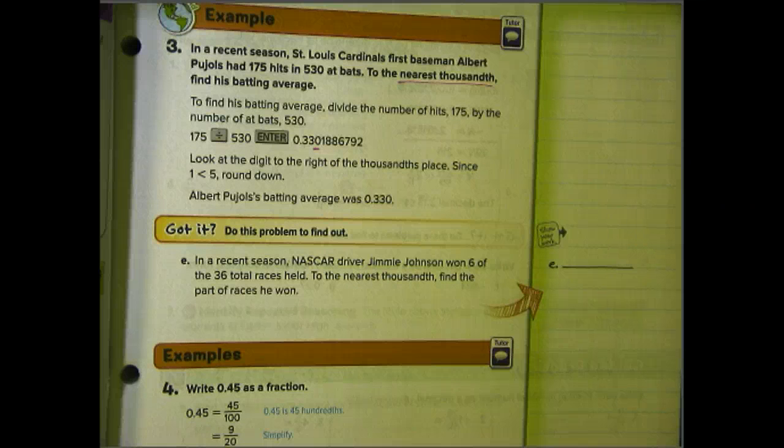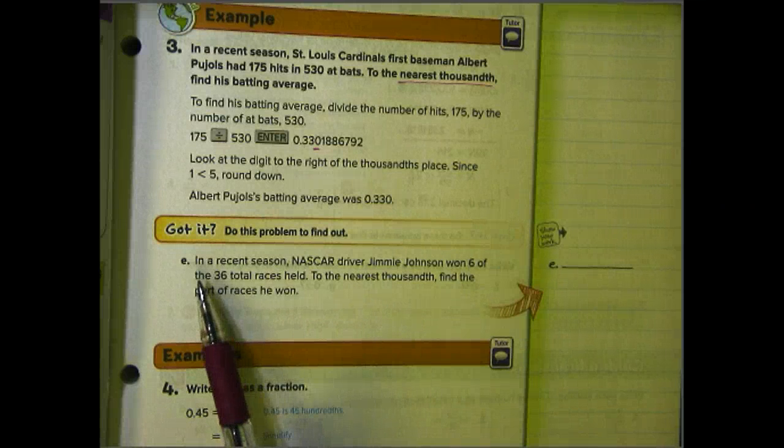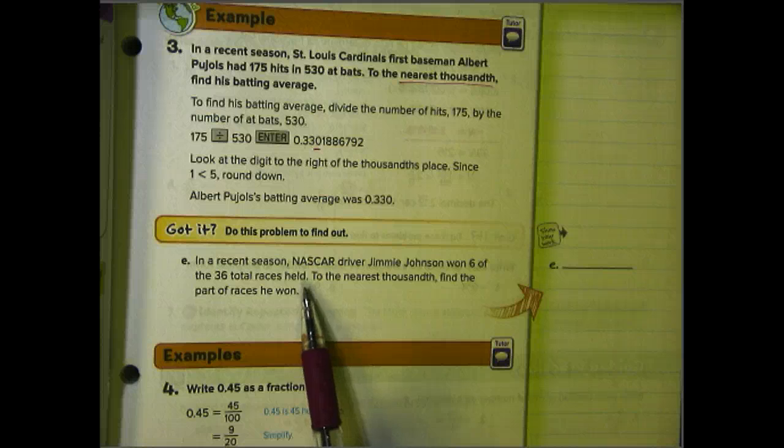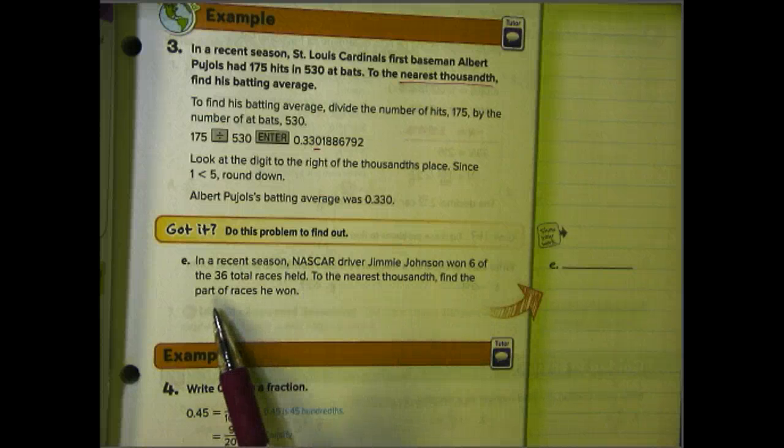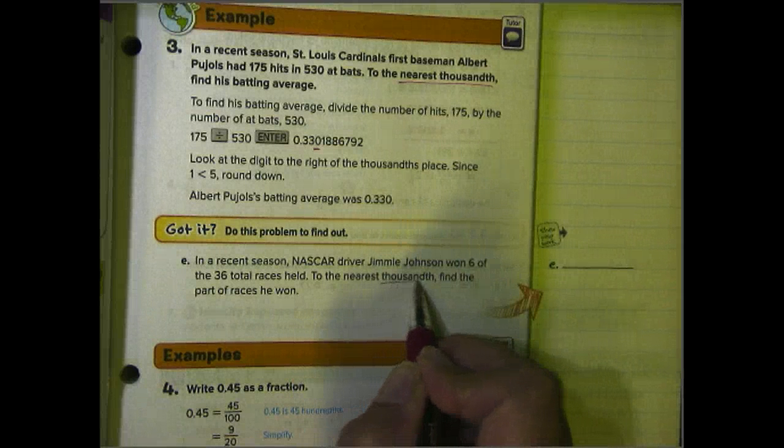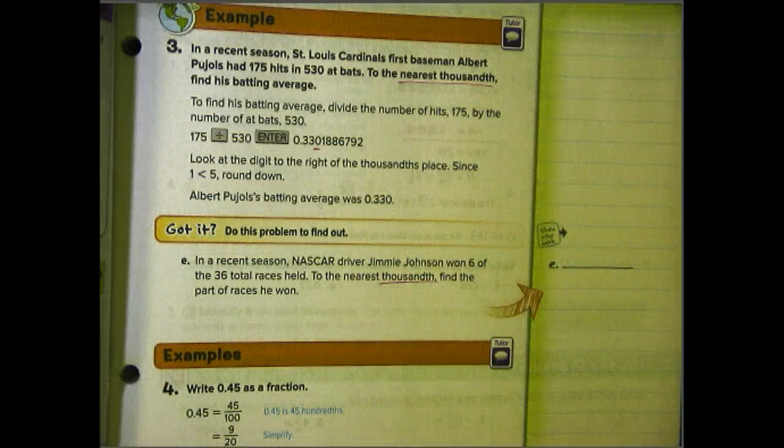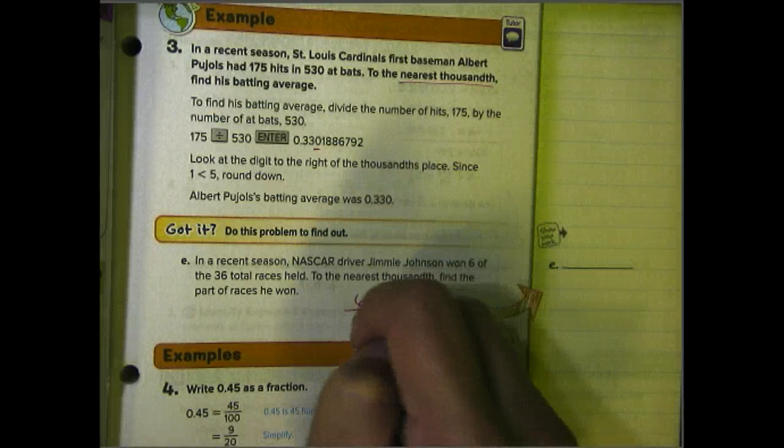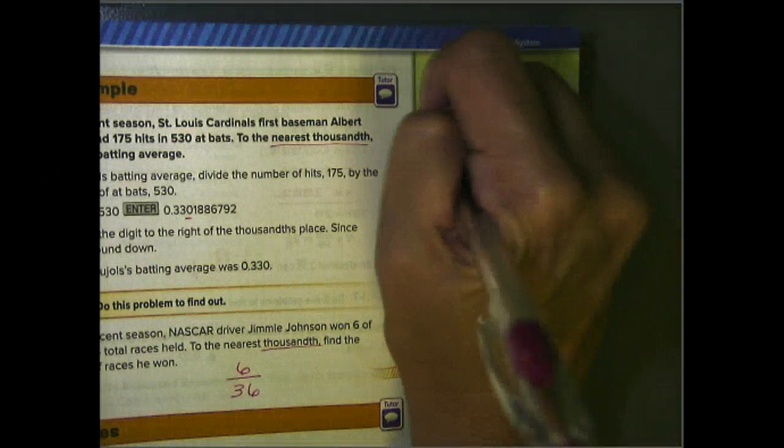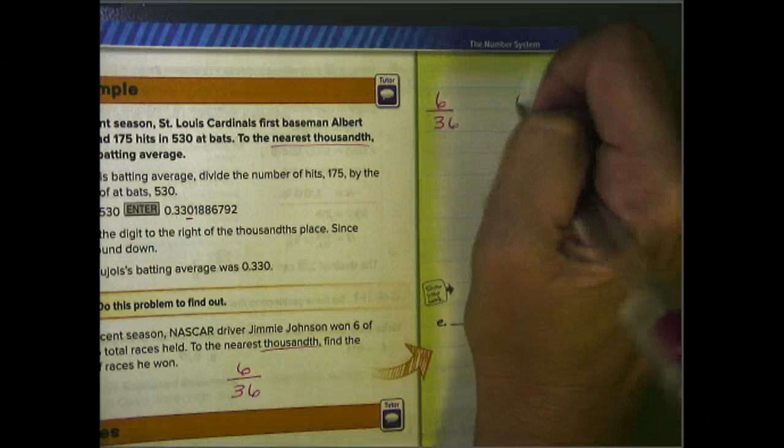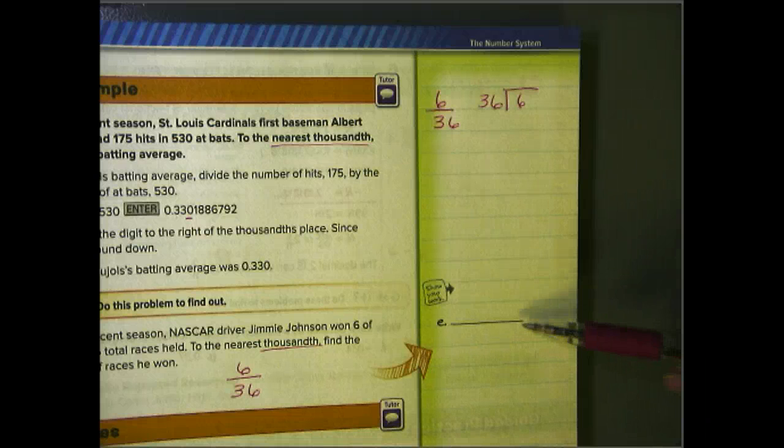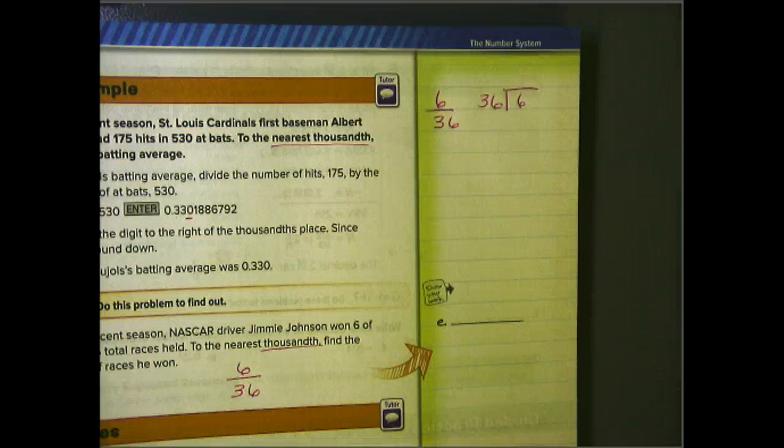Okay, I want you to take a minute, pause the video, and I want you to work on problem E. Problem E says, in a recent season, NASCAR driver Jimmy Johnson won six of the 36 total races held. To the nearest thousandth, find the part of races he won. So we're looking at thousandths, remember. And I don't want you to use a calculator. This one is fairly simple, 6 divided by 36. So remember we'll write it as this. And then if you would like, you can show your work right over here. So we have 6 divided by 36. That means we're going to take the numerator and divide it by the denominator. And I'll let you pause the video from here, you work the problem out, put your answer for E here in their book, and then come back so we can finish.